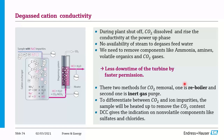Degassed cation conductivity is required when a boiler has been shutdown for a long time and is being restarted, as a lot of CO2 is present. CO2 creates interference in conductivity measurement. When water passes through the cationic resin, ammonium and other species are absorbed, but CO2 cannot be eliminated through the cation exchanger. So CO2 must be removed by the reboiler effect — by heating the sample, CO2 is eliminated, and the resulting sample gives a clear conductivity reading without CO2 interference.